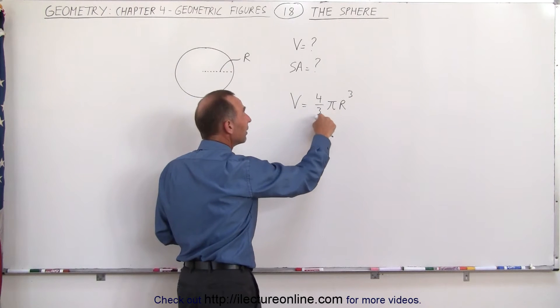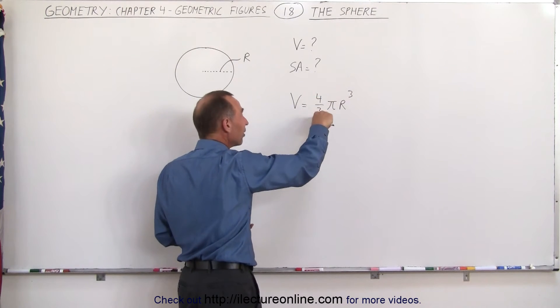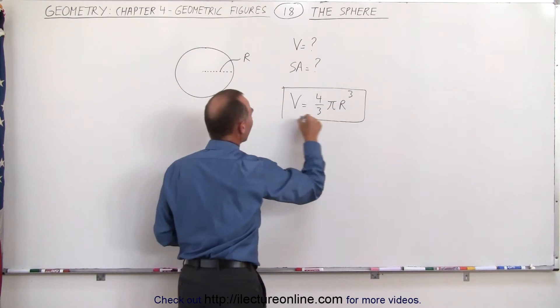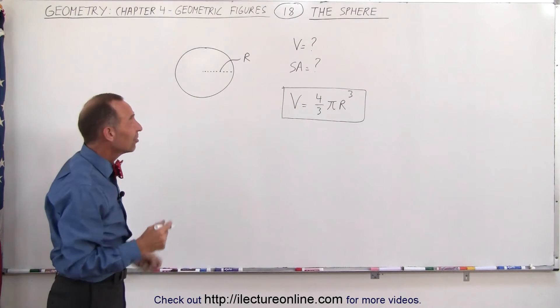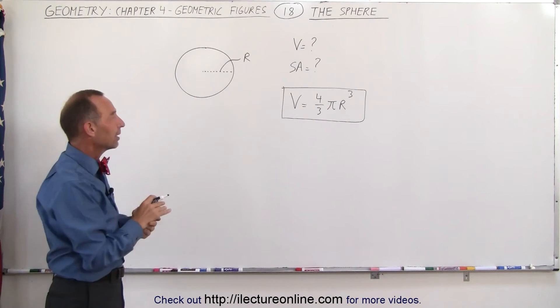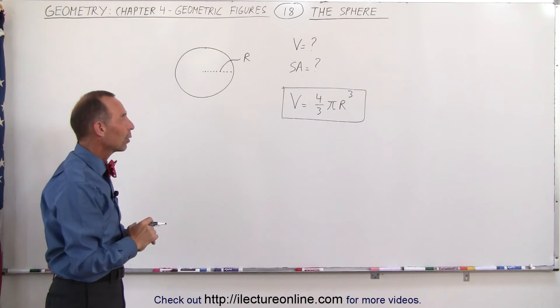We do want to have the pi there and the number, the fraction in front is four-thirds. So this is the volume of a sphere. We can find that equation again using some advanced methods of calculus but we don't need to do that here. We can simply memorize what that equation is.